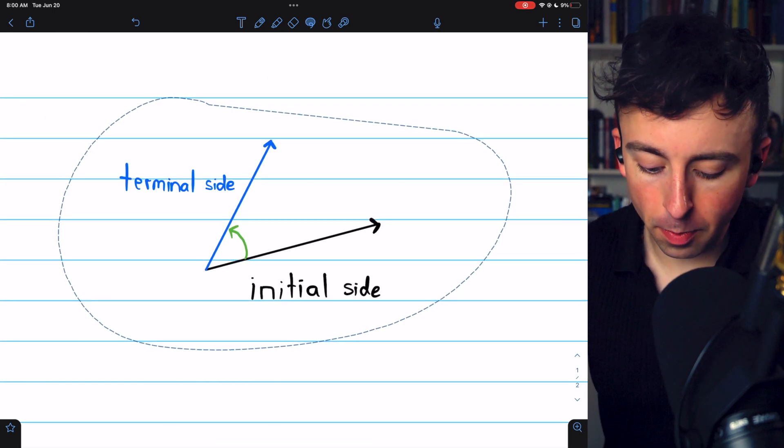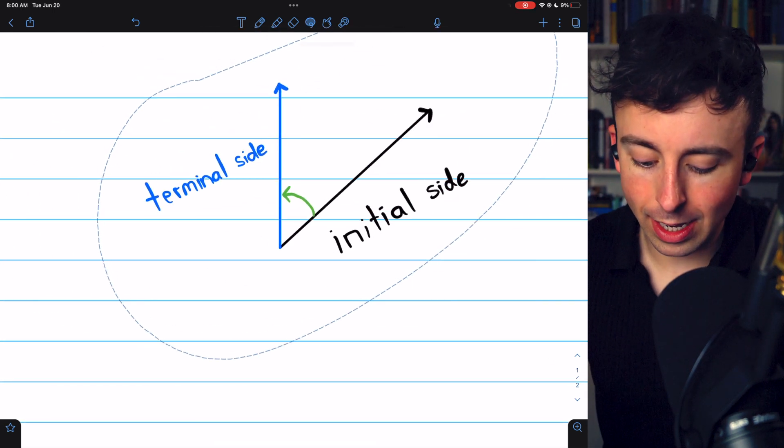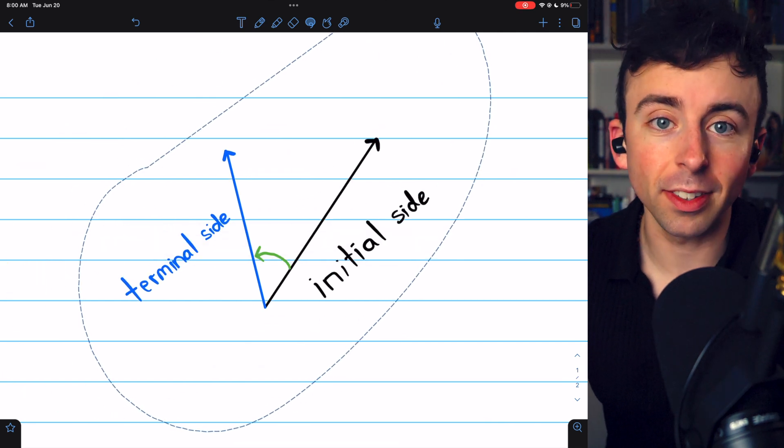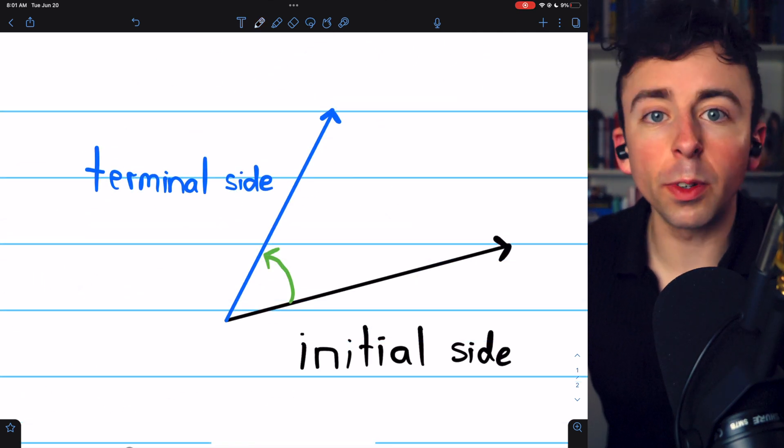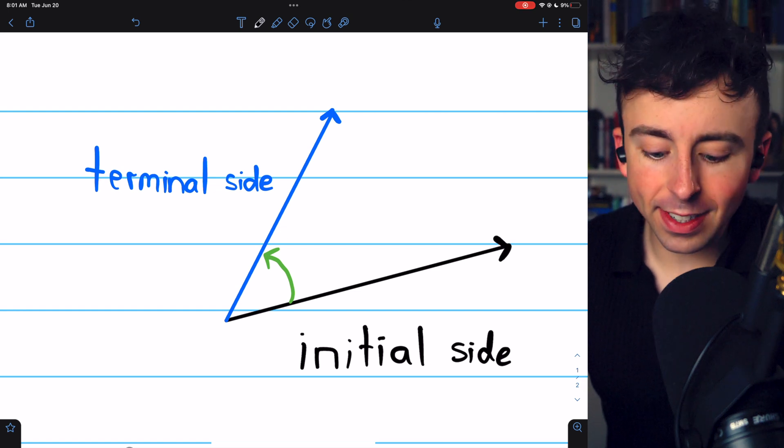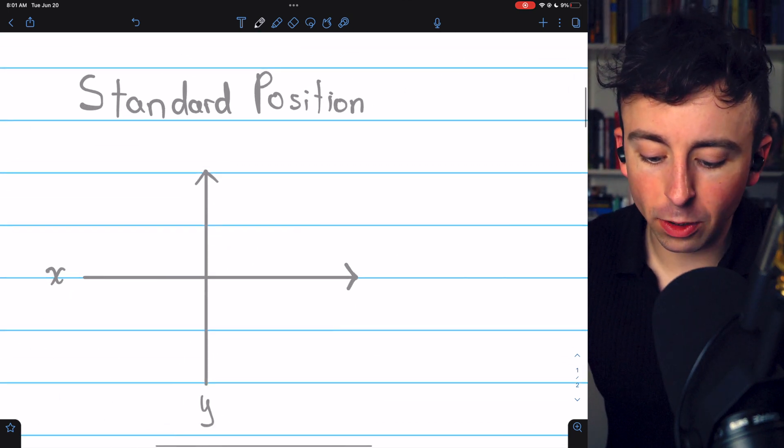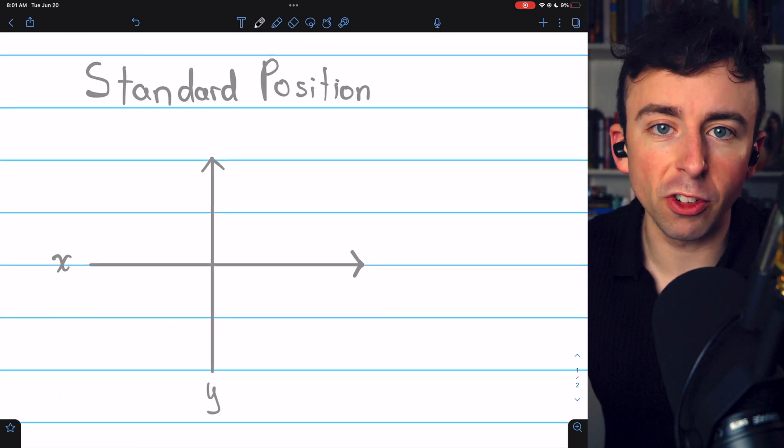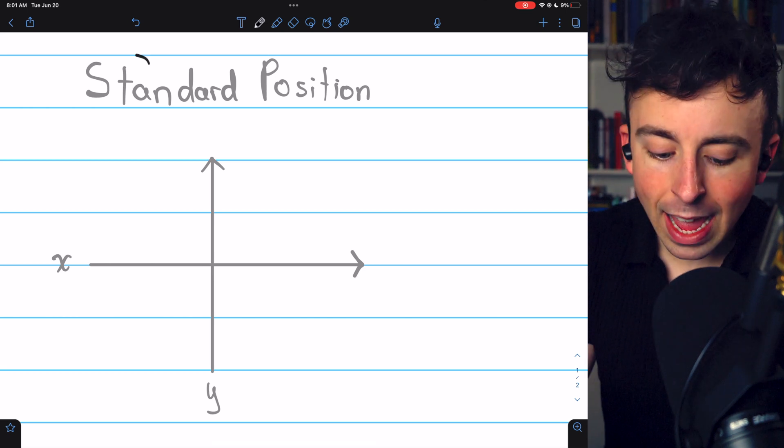Now, an angle could occur anywhere, and you could rotate it any which way. There's really no rules about this stuff. However, it is useful to have conventions. Oftentimes, we'll want to draw our angles in what is called standard position.